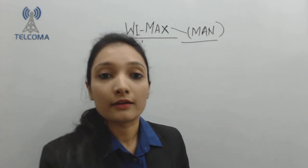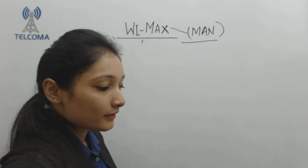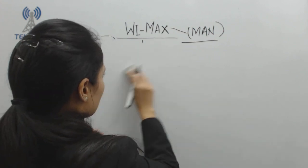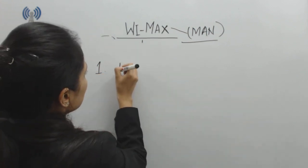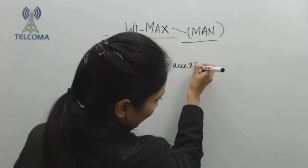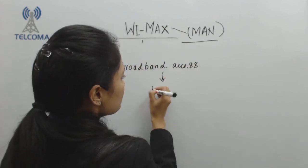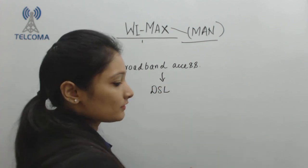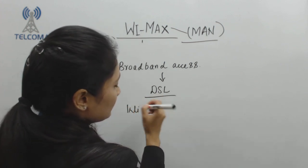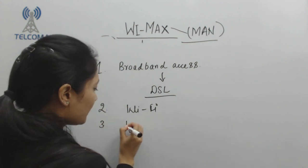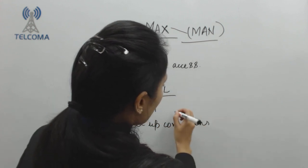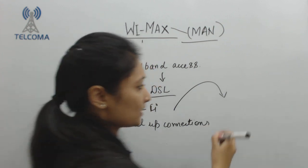There are certain ways to access the internet. For example, you have broadband access, which uses digital subscriber lines like T2/T3 lines and DSL lines. Next is Wi-Fi, and then we also have dial-up connections. From all of these, we are moving towards a new technology which can serve better than the existing ones.